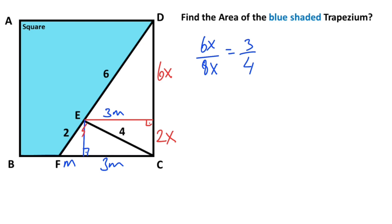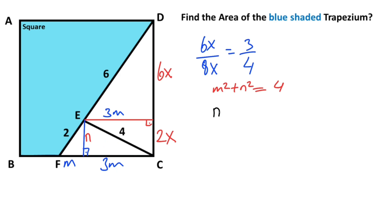Let's call this length n. If we focus on this triangle and apply the Pythagorean theorem: m squared plus n squared equals 4. Then for this second triangle, we can also apply the Pythagorean theorem: n squared plus 9m squared equals 16.